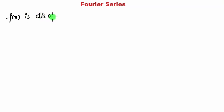is discontinuous at x equal to 0. Therefore, f of x is 1 by 2 times the limit